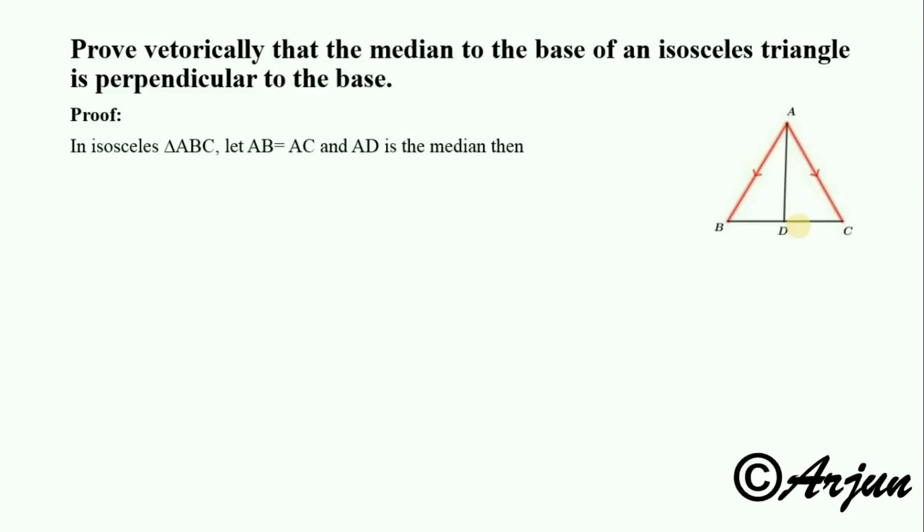AB and AC are equal, these are the equal sides. Since D is the midpoint of BC, the position vector OC equals one-half times vector A plus vector B.